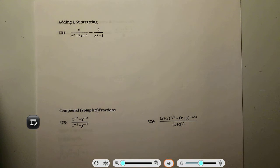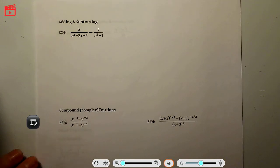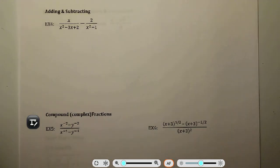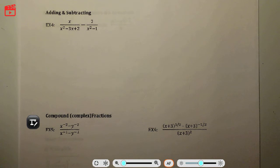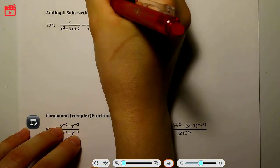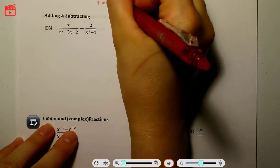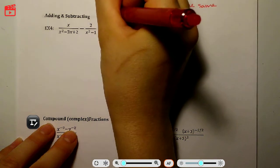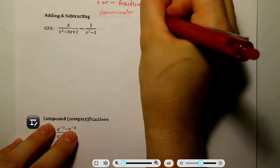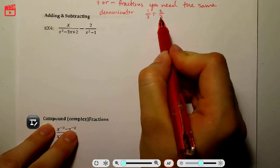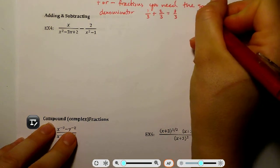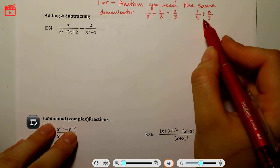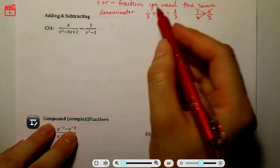Now instead of multiplication and division, we're adding and subtracting rational expressions. A little more work is required here. Remember: when adding or subtracting fractions, they need to have the same denominator. For example, 1/3 + 2/3 works because the denominators match. But 1/4 + 2/3 cannot be added directly because the denominators are different.